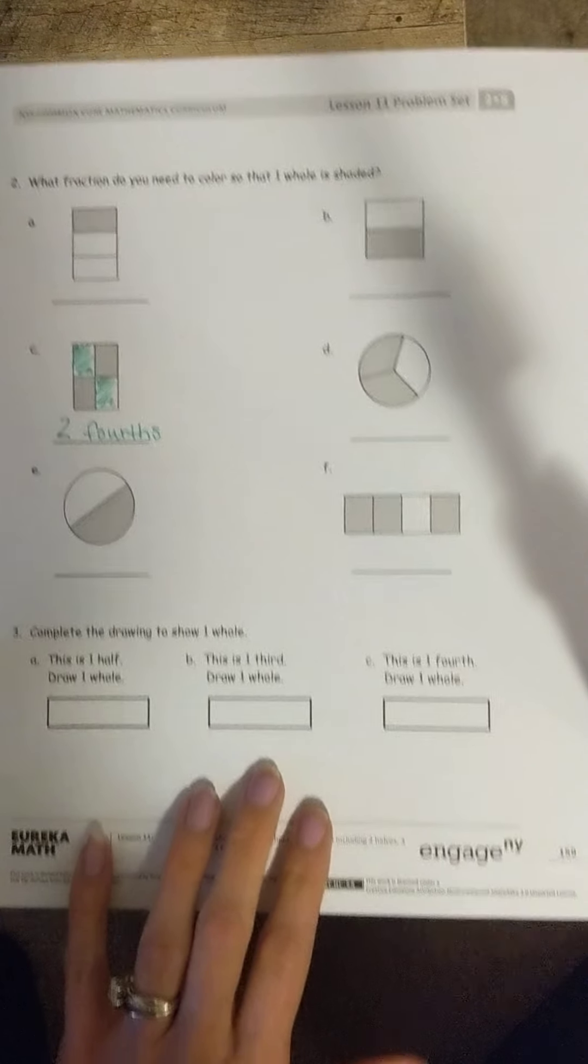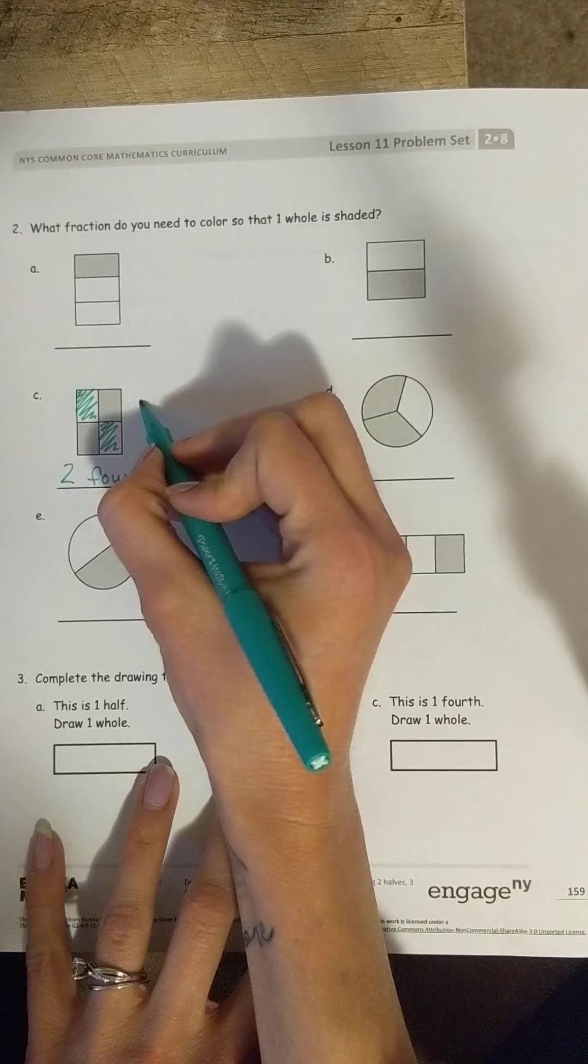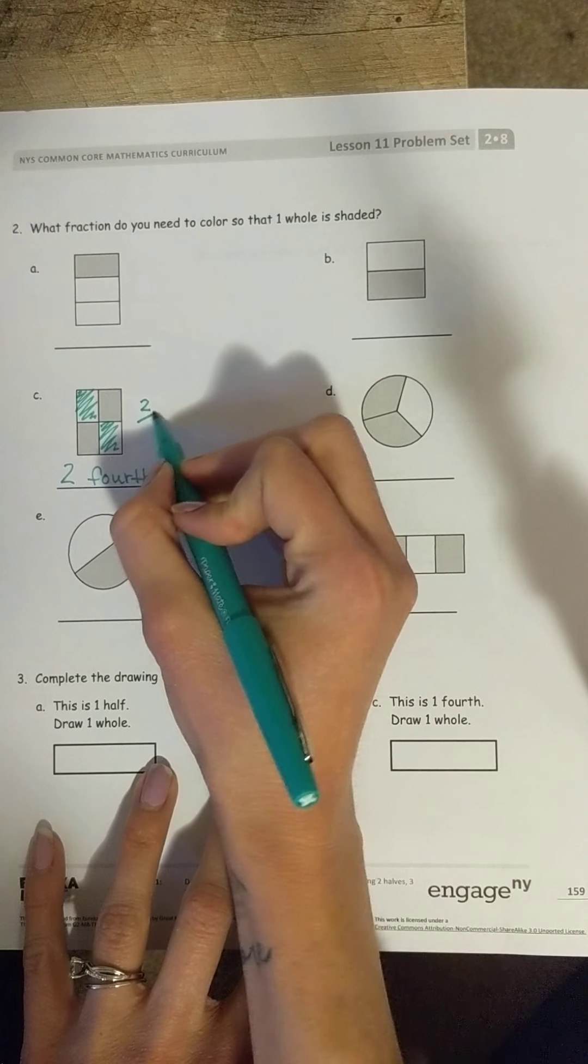That's one example for that section. I forgot a very important part. I would also say that means I need to color in two out of the four.